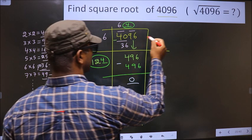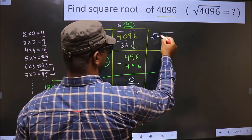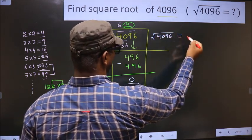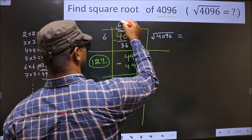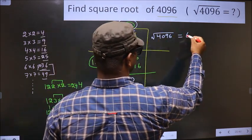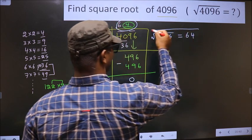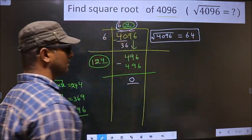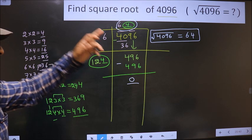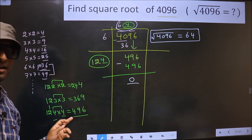And the square root of 4096 is this number, that is 64. So this is our answer. Am I clear?